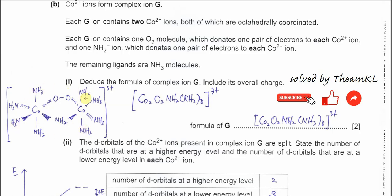Deduce the formula of complex ion G and its overall charge. The cobalt has octahedral geometry with two bridging linkages: one oxygen and one NH₂⁻. Each cobalt is +2, so total cobalt charge is +4. Because NH₂⁻ carries a charge of -1, the overall charge is therefore +3 positive.